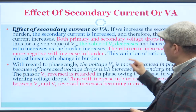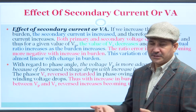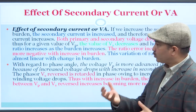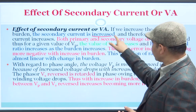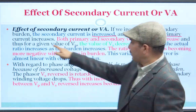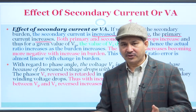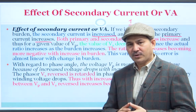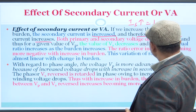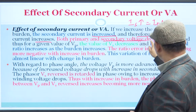Let us first start with the effect of secondary current or volt-ampere. If we increase the secondary burden — the burden connected to the potential transformer, which may be a voltmeter, relay circuit, or voltage coil of a wattmeter — then if you increase the load, the secondary current will obviously increase. And if the secondary current increases, then the primary current will also increase. Because if Is is increasing, you have to draw more power from the primary — so Ip also needs to increase. Therefore, both primary and secondary voltage drops increase.